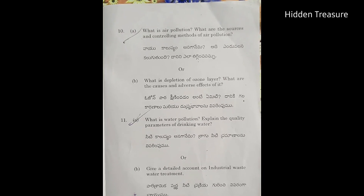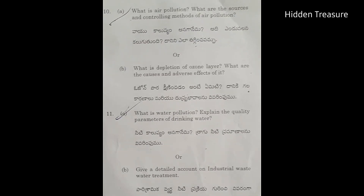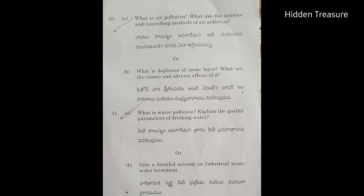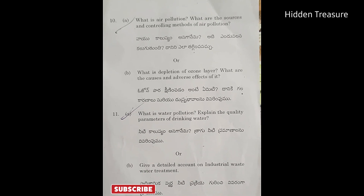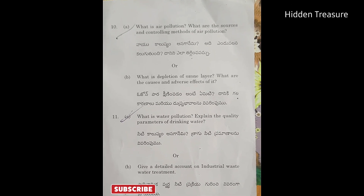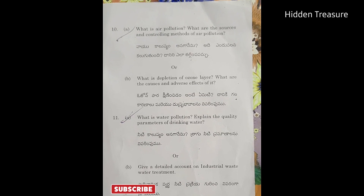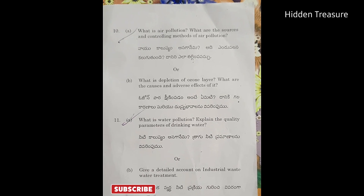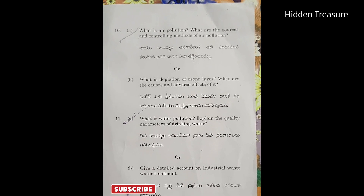What is depletion of ozone layer? What are the causes and adverse effects of it? 11th Question: What is water pollution? Explain the quality parameters of drinking water. B.